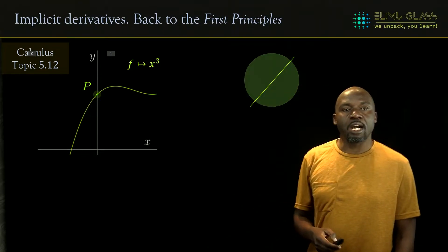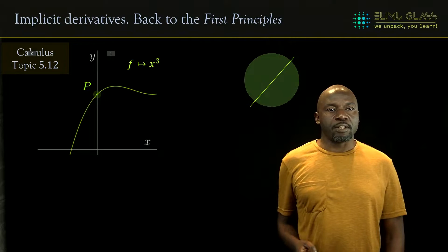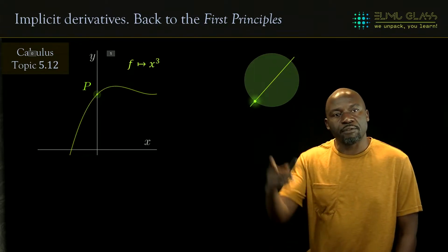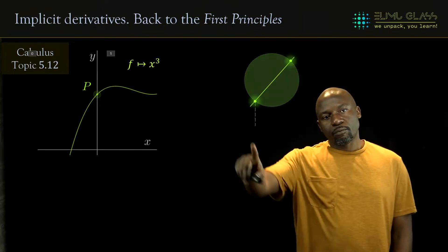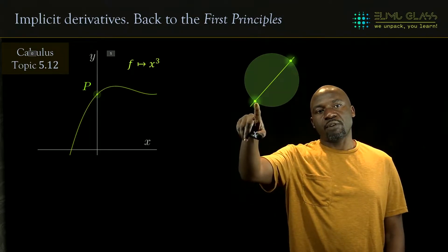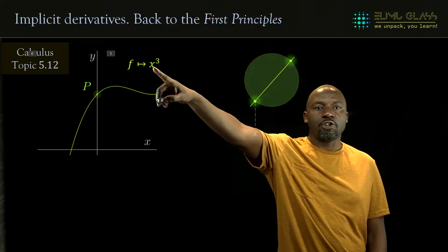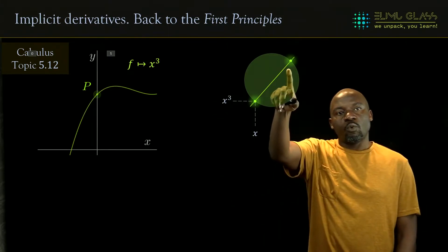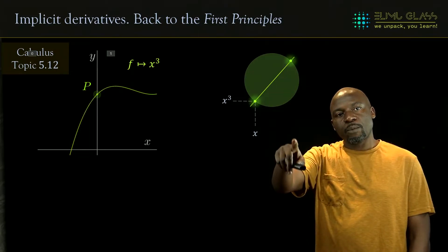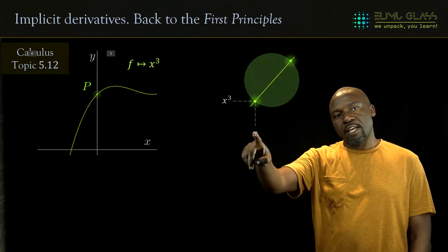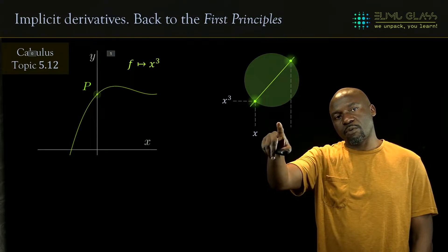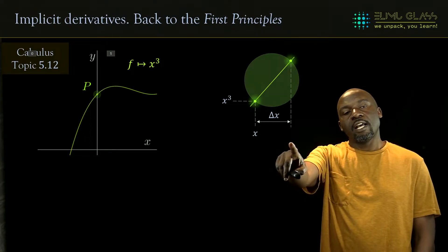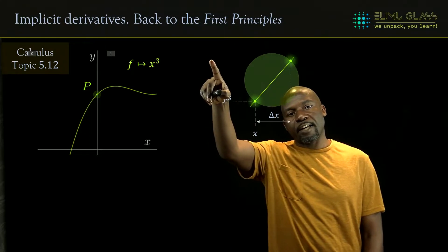Please check that video to see how we worked with this. We find the gradient of this line by picking two points at the ends of point P. We find the x-coordinate on the x-axis, substitute into the function to get y-coordinate x cubed. For the second point, if the distance is delta x, then the x-coordinate is x plus delta x, and consequently the y-coordinate is (x + Δx) cubed.